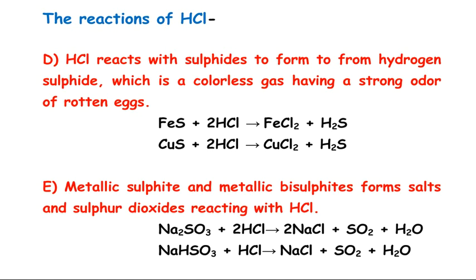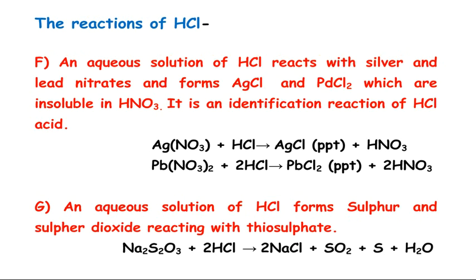For example, Na2SO3 in the presence of HCl produces NaCl, SO2, and H2O. The aqueous solution of HCl reacts with silver nitrate and lead nitrate to form silver chloride and lead chloride, which are insoluble in HNO3 — these are identification reactions of HCl. Aqueous HCl also forms sulfur and sulfur dioxide when reacting with thiosulfate: Na2S2O3 in the presence of HCl produces NaCl, SO2, sulfur, and water.